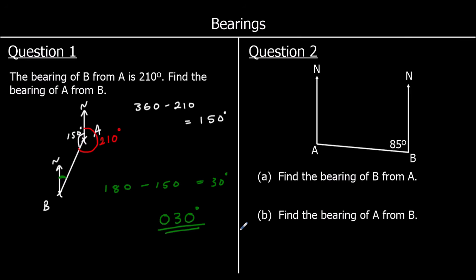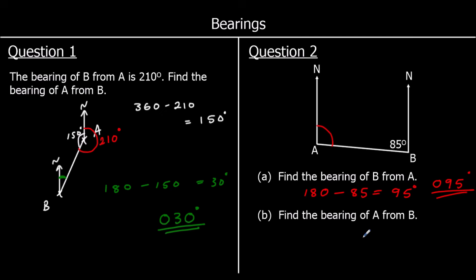Question two: we've got 85 degrees shown on the diagram — that's not a bearing, it's just an angle given to us. We need to find the bearing of B from A: from A to B, from north, going clockwise. We can see that's co-interior with 85, so 180 take away 85 is 95. The bearing of B from A is 095 degrees — remember, a bearing is always three figures. The bearing of A from B — from B, from north, clockwise — angles around the point add up to 360, so 360 take away 85 is 275 degrees.